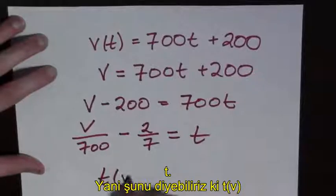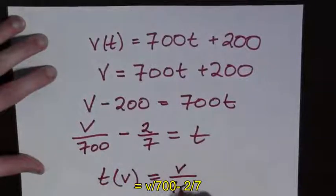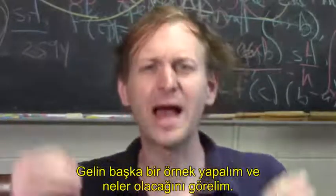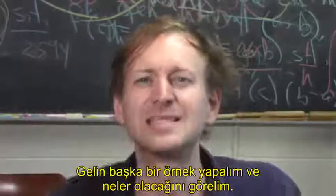And so finally, t(v) is equal to v over 700 minus 2 sevenths. Well that was great, that problem wasn't hard at all. Let's go ahead and try another example and see what happens.